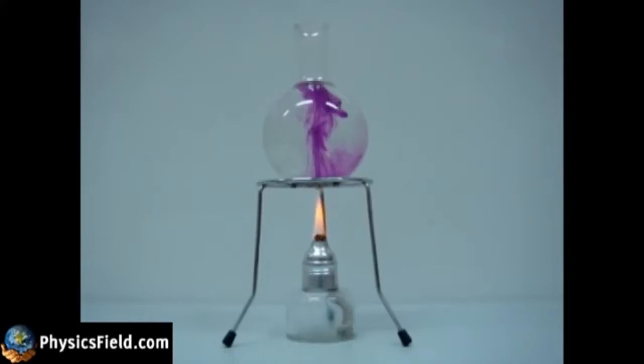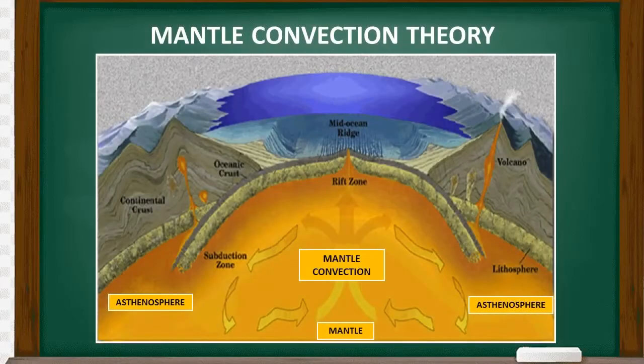As it rises, it pulls cool fluid down to replace it. As the cool fluid becomes heated, it also rises and pulls down more cool fluid, creating a cycle that stops only when the heat is eventually distributed throughout the fluid. One driving force behind plate tectonic is mantle convection.